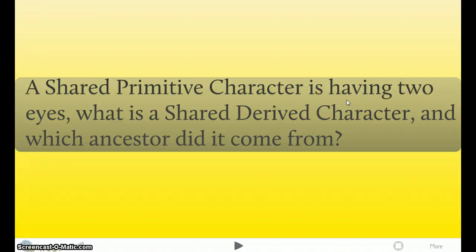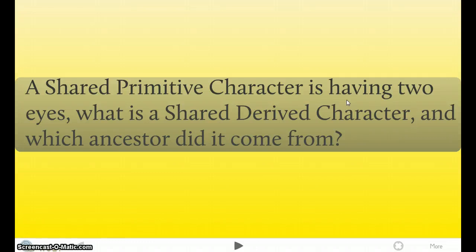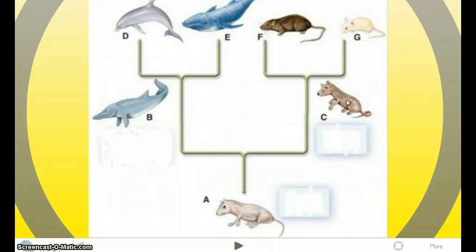Our next question, a Shared Primitive Character is having two eyes, what is a Shared Derived Character, and which ancestor did it come from? So if a Shared Primitive Character is having two eyes, and Shared Primitive Character is a character that is derived from their latest ancestor. So A has two eyes, which means all of these guys have two eyes, and that's your Shared Primitive Character because A had it.